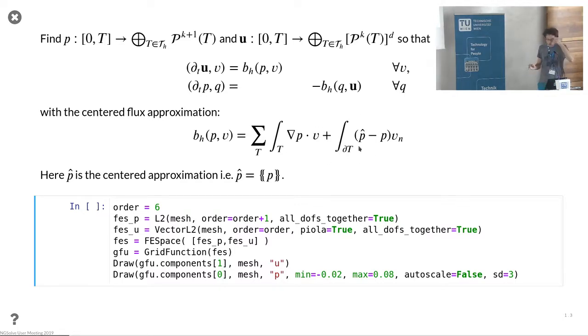We use discontinuous polynomials order k plus one for the pressure and order k vector valued for the velocity in every element. The formulation is obtained by doing partial integration with numerical flux, using a centered approximation for an energy conserving scheme.